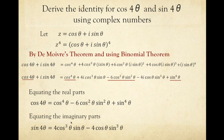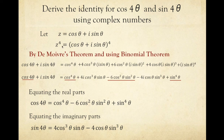If you are deriving identities for 5 theta — like cosine 5 theta or sine 5 theta — or cosine 6 theta and sine 6 theta, the steps and procedures will be similar: you use De Moivre's theorem and the binomial theorem. For cosine 5 theta, raise both sides to the power of 5. For sine 6 theta, raise to the power of 6, then use the binomial theorem to expand cosine theta plus i sine theta to that power.